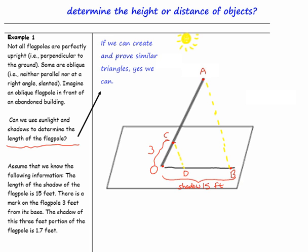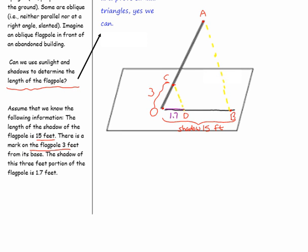So here we have triangles; now we just need to prove that they are similar. We've labeled some of our triangles. The length of the shadow is 15 feet, the mark on the flagpole is 3 feet from the base, and the shadow of this 3-foot portion is 1.7 feet. Our first triangle and second triangle have angle O in common, so we know angle O is congruent to angle O, which is in both triangles.